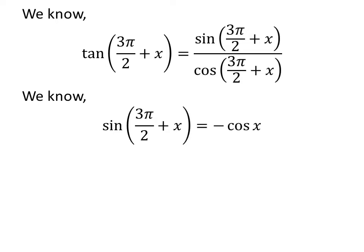We know, the trigonometry identity sine of 3 times pi upon 2 plus x is equal to minus cosine of x. The video appearing in the upper right corner explains the verification of the said identity. The link of the video is also mentioned in the description section.